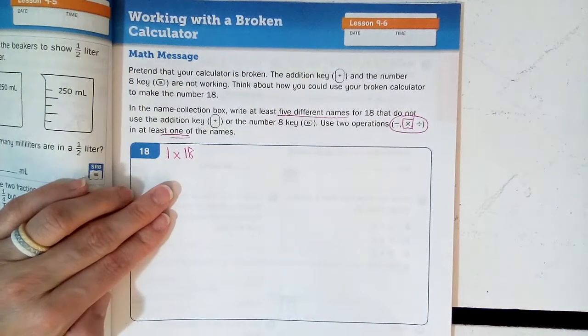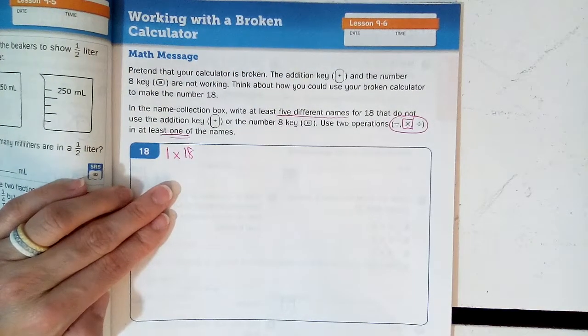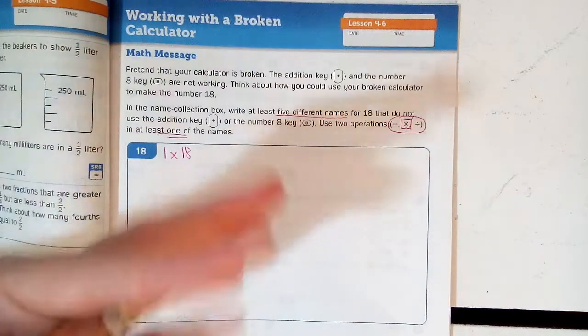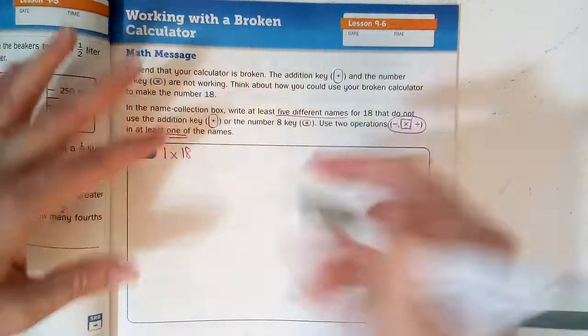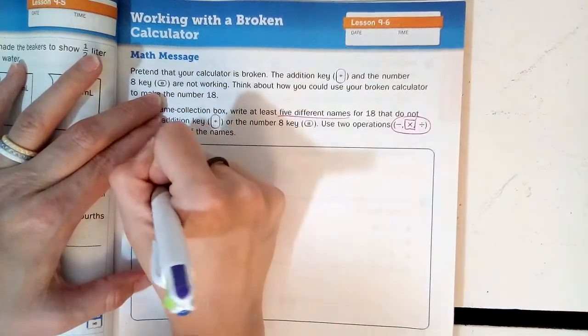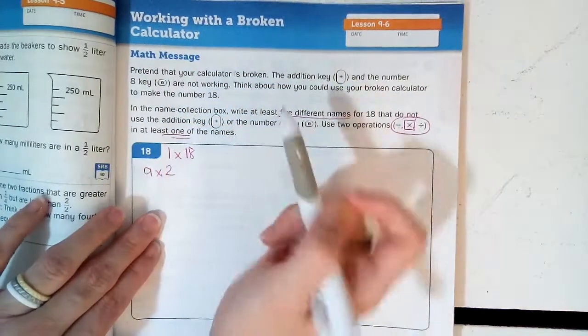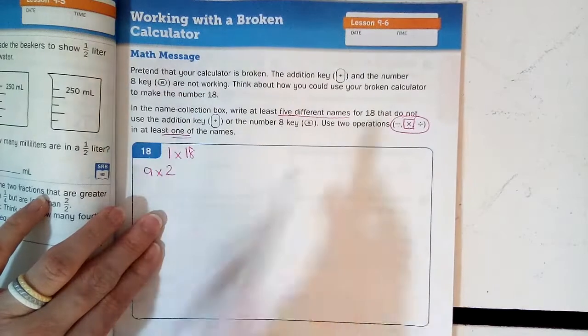What about twos? Can we skip count by twos? 2, 4, 6, 8, 10, 12, 14, 16, 18. Nine times two. And I didn't use eight. So no eights allowed.